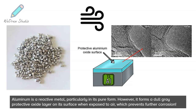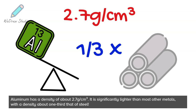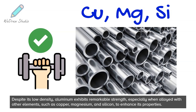Aluminum has a density of about 2.7 grams per cubic centimeter. It is significantly lighter than most other metals, with a density about one-third that of steel. Despite its low density, aluminum exhibits remarkable strength, especially when alloyed with other elements such as copper, magnesium, and silicon, to enhance its properties.